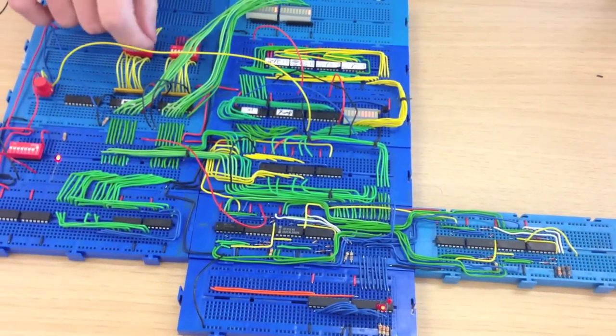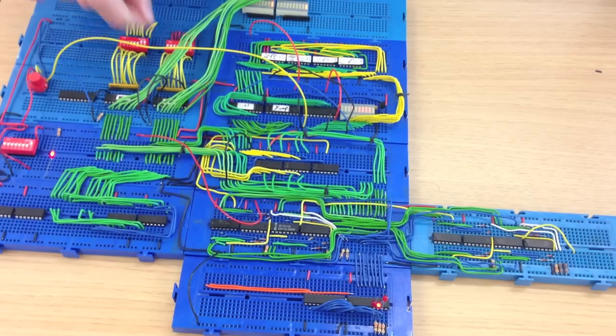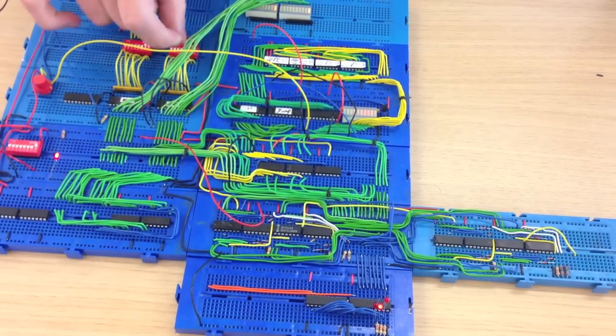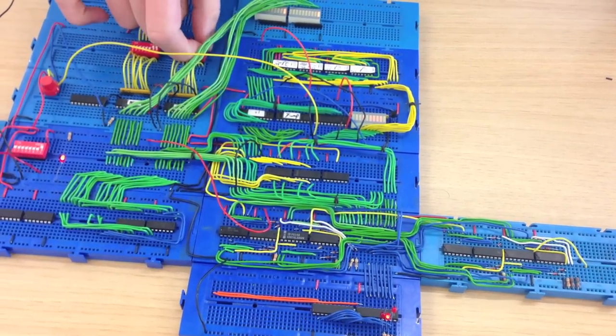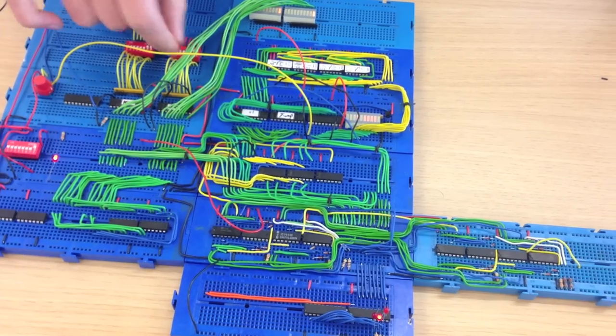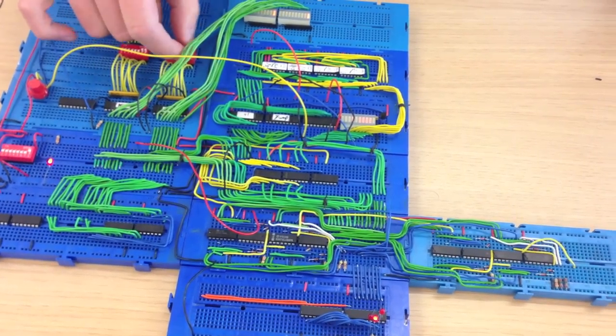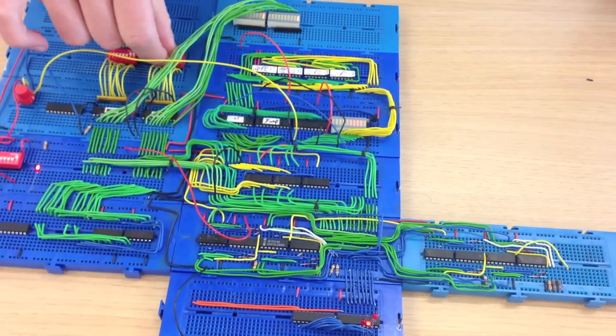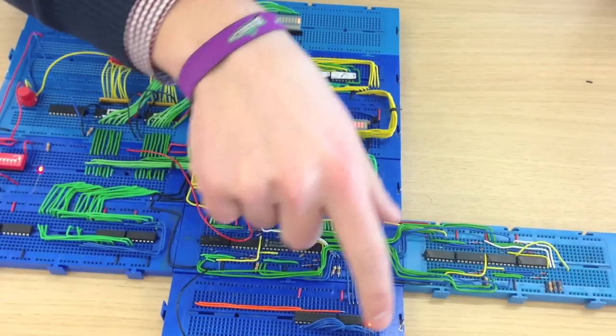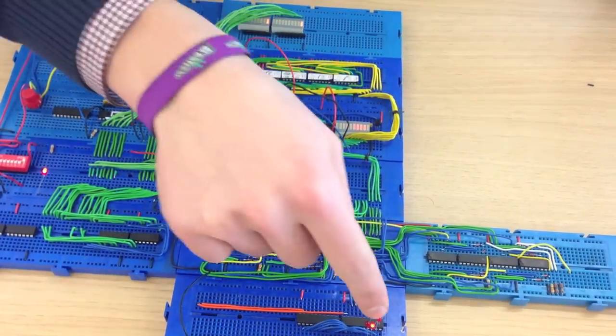To show that I'm not lying to you, I will now put some values. Let's say we want to add three with the number one. These two should be off and this should be on, which means four.